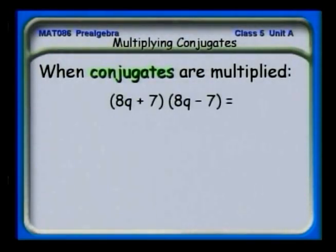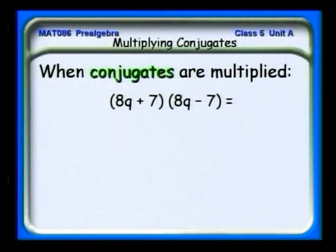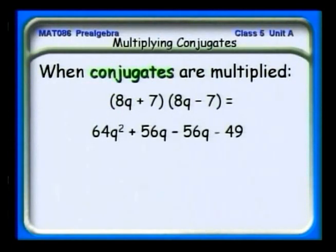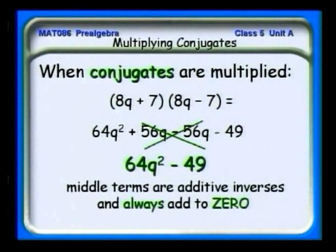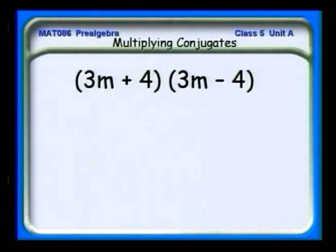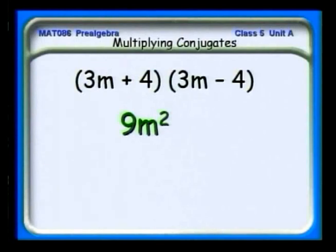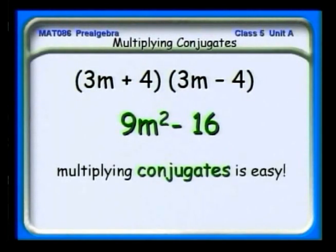When conjugates are multiplied — for example, (8q + 7)(8q − 7) — I can immediately see it's 64q squared, and notice the inner and outer terms cancel each other out. So I have the square of the first minus the square of the second. We always find this with conjugates: the middle terms are additive inverses and always add to zero. Let's do one more: (3m + 4)(3m − 4) = 9m squared minus 16.